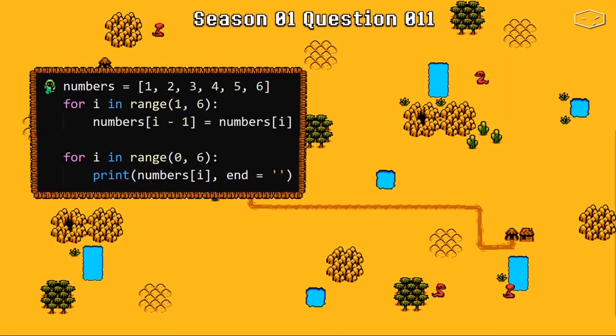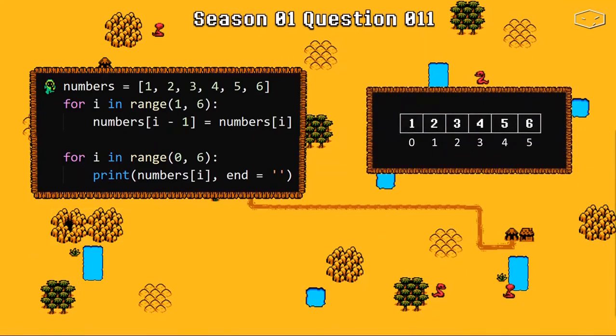Let's understand this code. Python starts reading the first line of our code. It creates a list in memory like this one and also a variable called numbers that is pointing to our list. Then Python goes to the first loop and now we have a range.